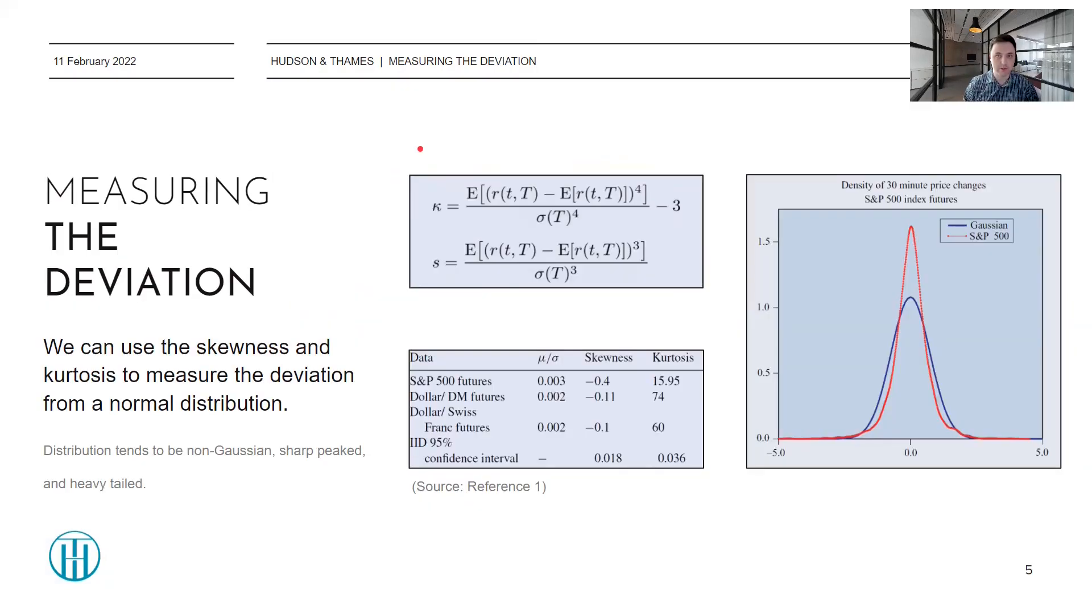Given the points I've just mentioned, let's discuss how one could numerically get an indication for how much your sample distribution differs from a Gaussian or normal distribution. In Rama's paper, he discusses that one can use the skewness and kurtosis to measure the deviation from a normal distribution.